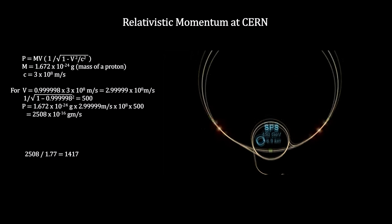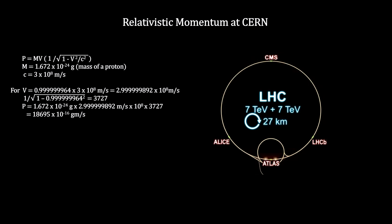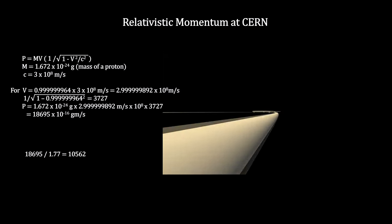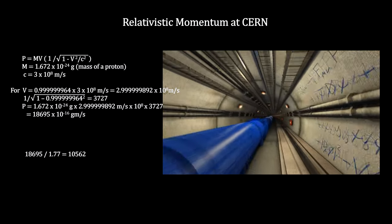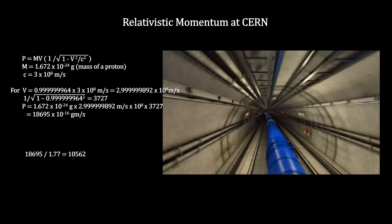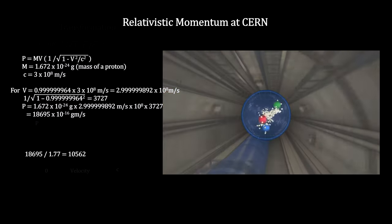Finally, the Large Hadron Collider accelerates these incoming protons to 99.99999964% of the speed of light. The protons' momentum tops out at 10,562 times its original momentum. At this level, Galilean transformations would be off by over 99.9%.